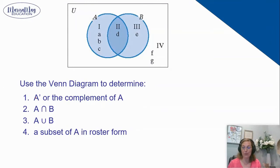Let's look at number one. We want A with a little apostrophe, we might say A prime. This refers to the complement in A. What we want here is everything that's not in A. So we want everything not in A, and I'm going to list it in what's called roster form.